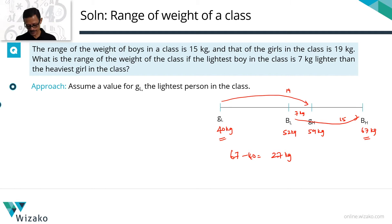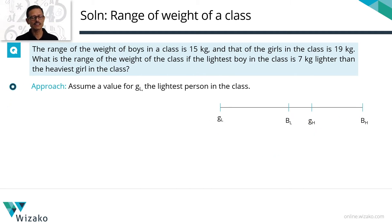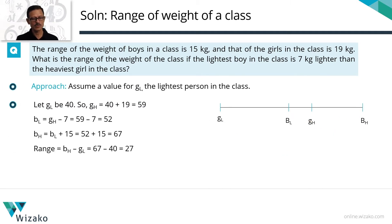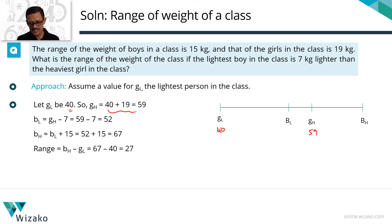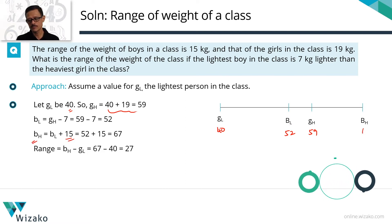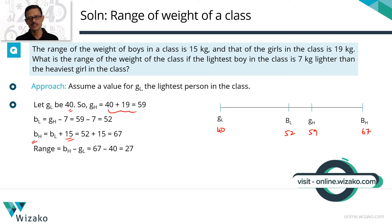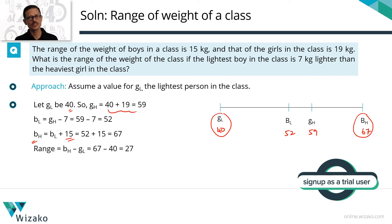To quickly recap in printed form: assume the lightest girl weighs 40 kg. The heaviest girl is therefore 40 plus 19 equals 59 kg. The lightest boy is 7 kg lighter than the heaviest girl: 52 kg. The heaviest boy is 15 more than the lightest boy: 67 kg. The heaviest member of the class is 67 kg, the lightest is 40 kg, and the difference equals 27 kg.